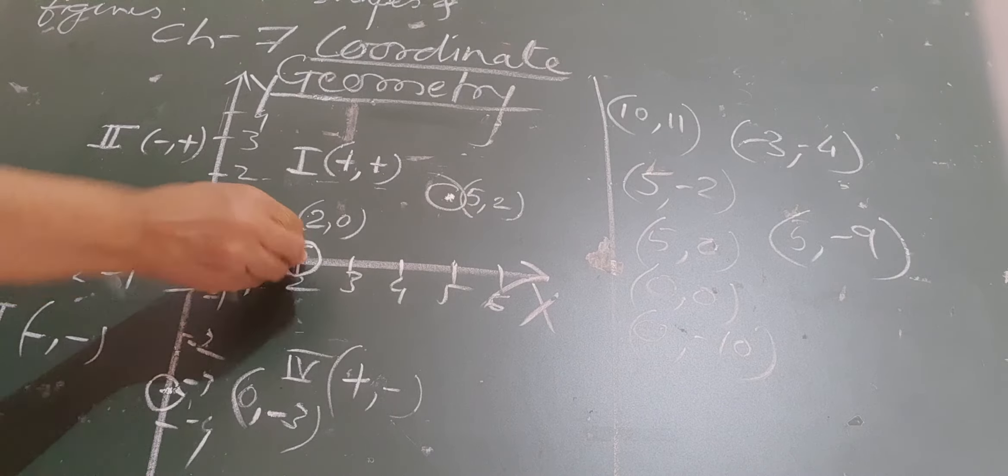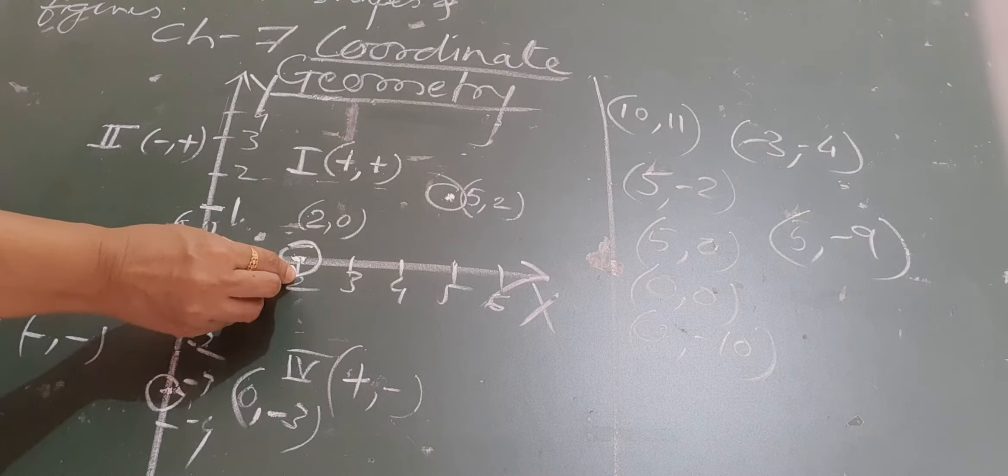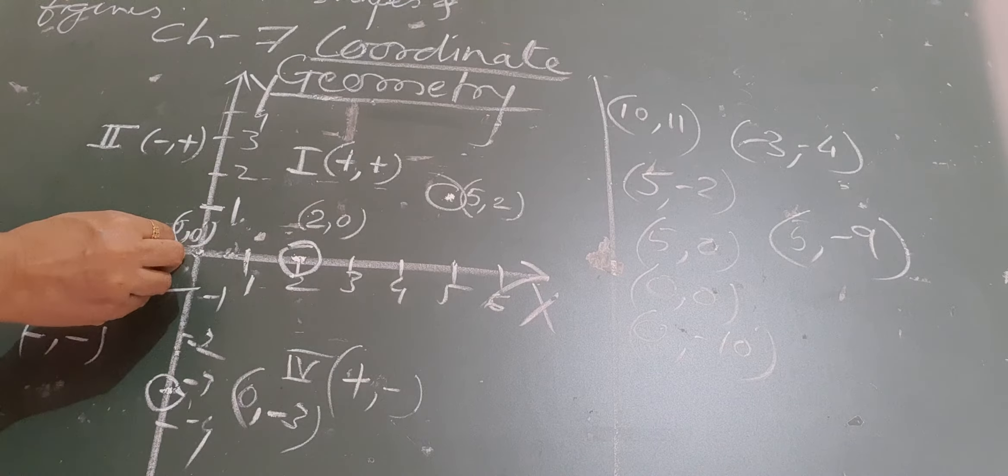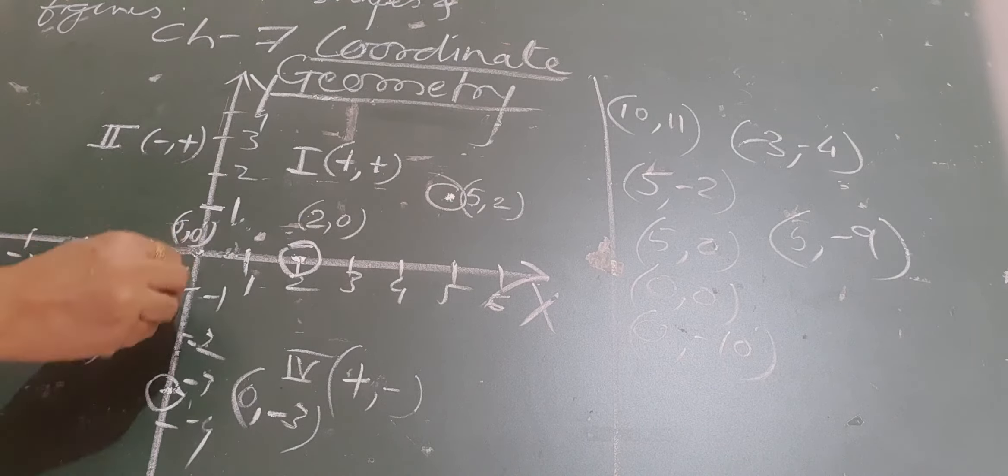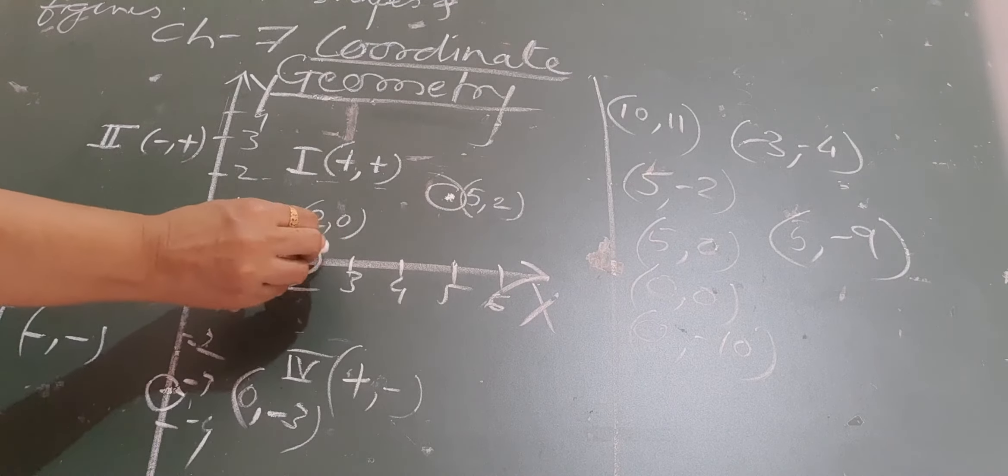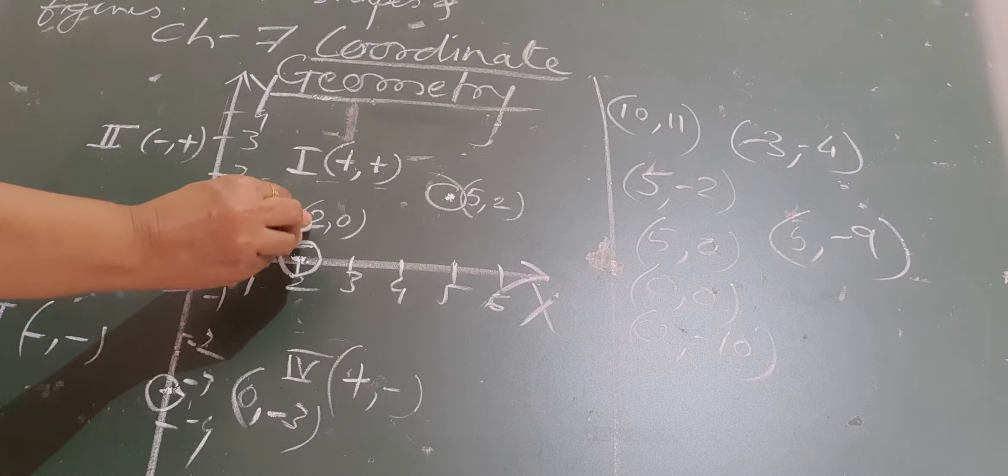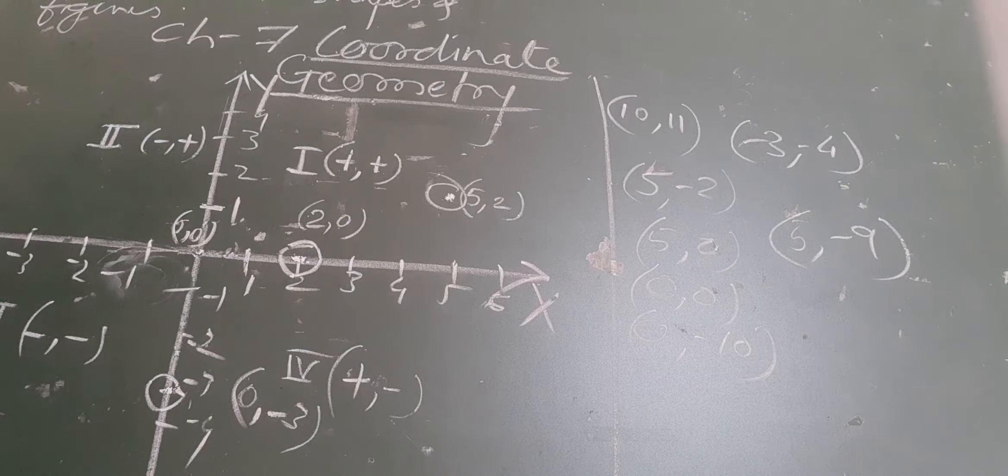Now if the point is on the axis, we can see here the x coordinate is 2 and the y coordinate is 0, because the point is lying on the x-axis. So if any point is on the x-axis, its y coordinate will be 0.